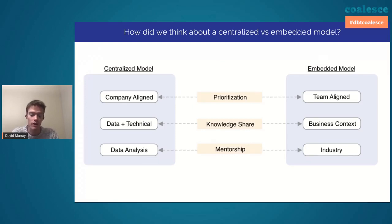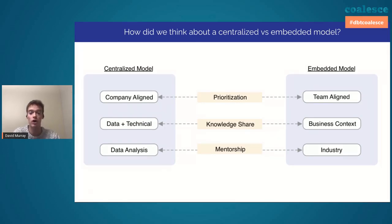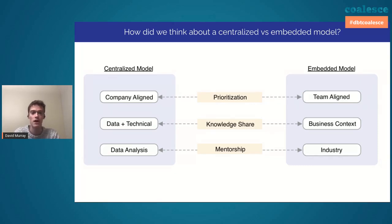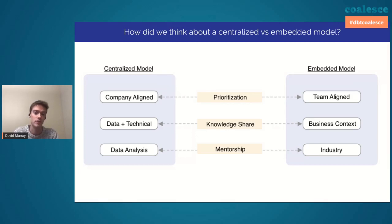First we'll talk about centralized versus embedded — a lot has been written about this. At a high level, the centralized model is the center of excellence model where the data resources all work on the same team and exist to serve the business stakeholders, kind of like a client and a consultant would. The embedded model is where analysts work embedded on business unit teams and report up to senior members or heads of business lines like finance, growth, or supply.